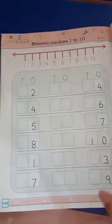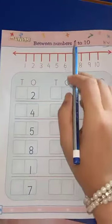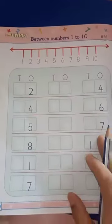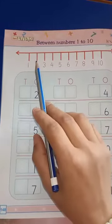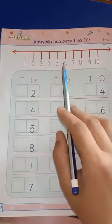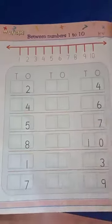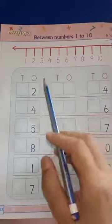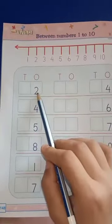Today we'll do between numbers 1 to 10. Let's start the counting: 1, 2, 3, 4, 5, 6, 7, 8, 9, and 10. Now let's start the between numbers. Which number is this? Number 2. And which number is this? Number 4. So what comes in between 2 and 4? 2, 3, 4.